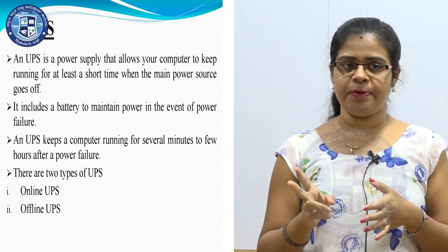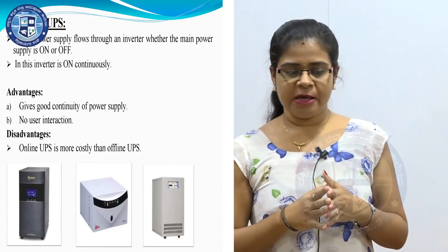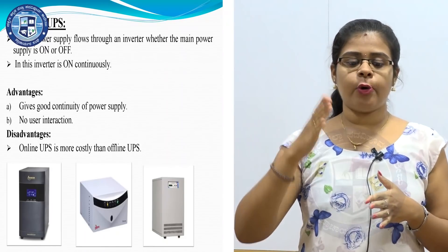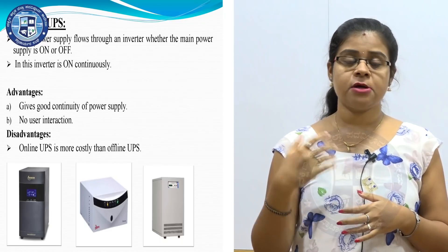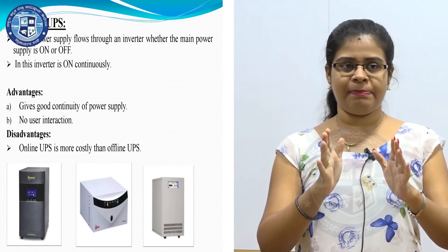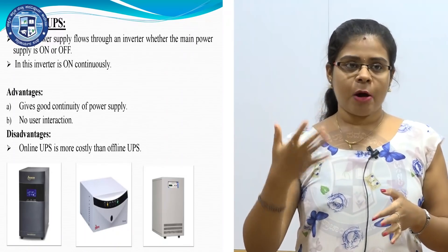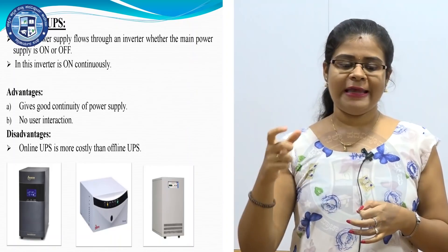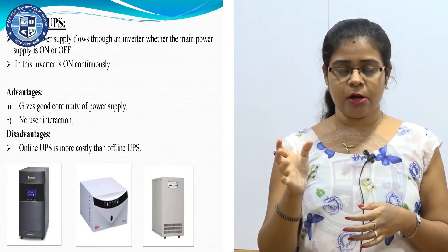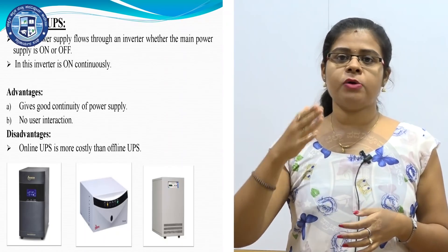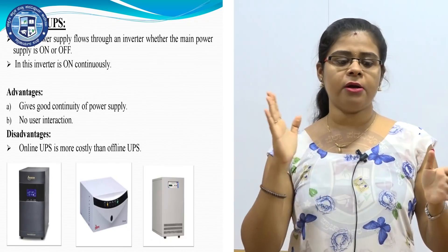There are two types of UPS: online UPS and offline UPS. In online UPS, the power supply flows through an inverter whether the main power supply is on or off. The inverter in an online UPS remains on continuously.